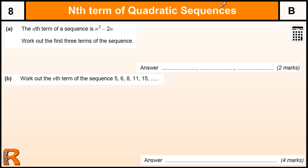Nth Term of Quadratic Sequence, Grade B Topic. First of all, a nice easy two marks. The nth term of a sequence is n squared minus 2n. Work out the first three terms.